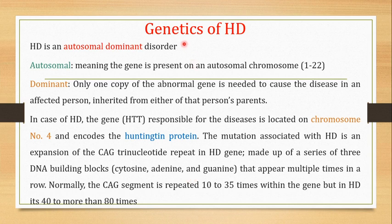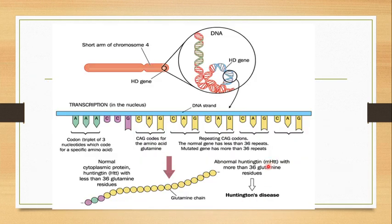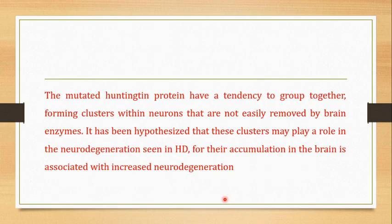Huntington's disease is an autosomal dominant genetic disorder. The gene responsible for HD is located on chromosome number four and it encodes a particular protein known as the huntingtin protein. There is a mutation in the huntingtin gene — specifically an expansion of the CAG trinucleotide repeat — and when this expansion occurs it leads to the formation of an abnormal huntingtin protein, which causes Huntington's disease.